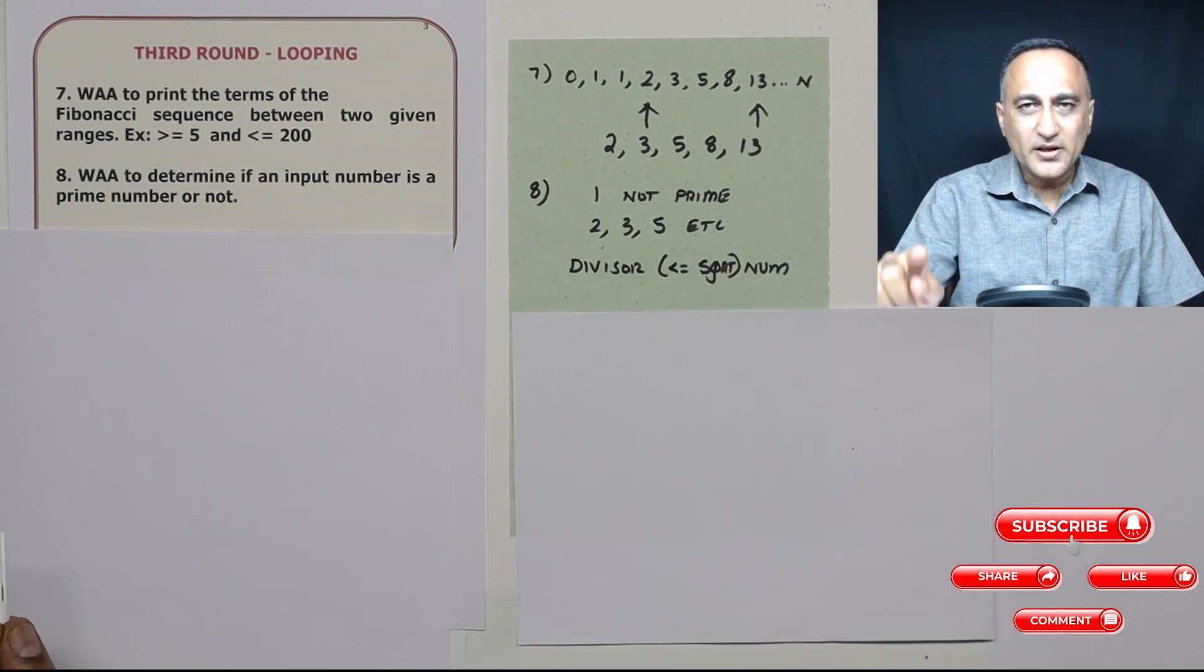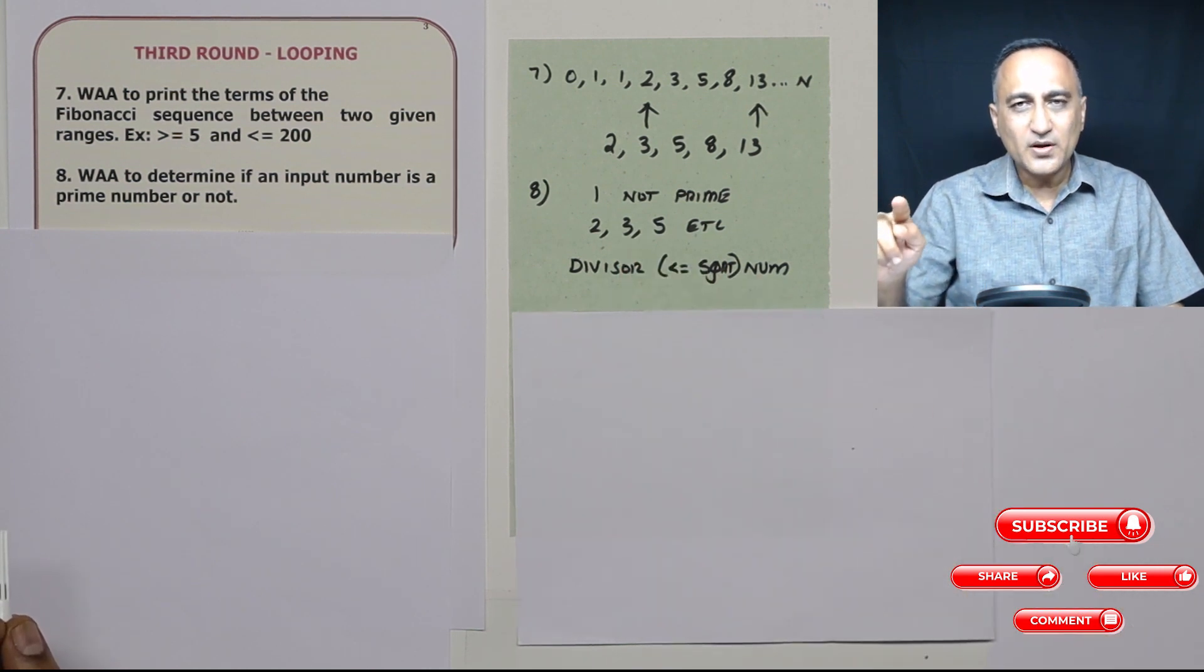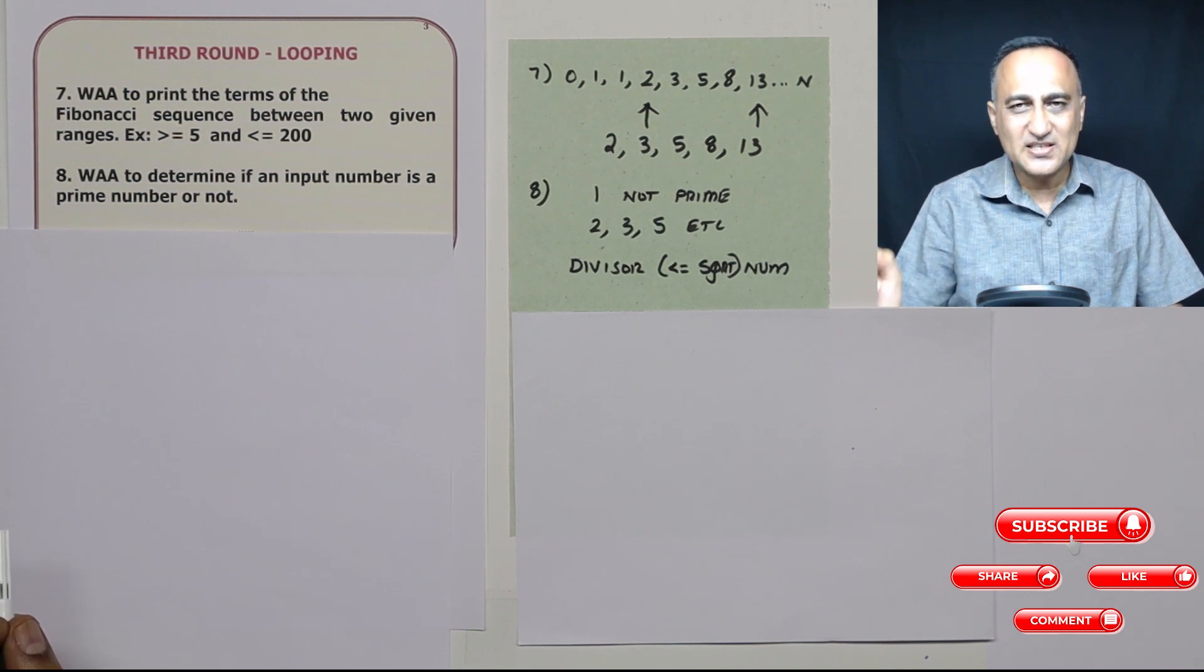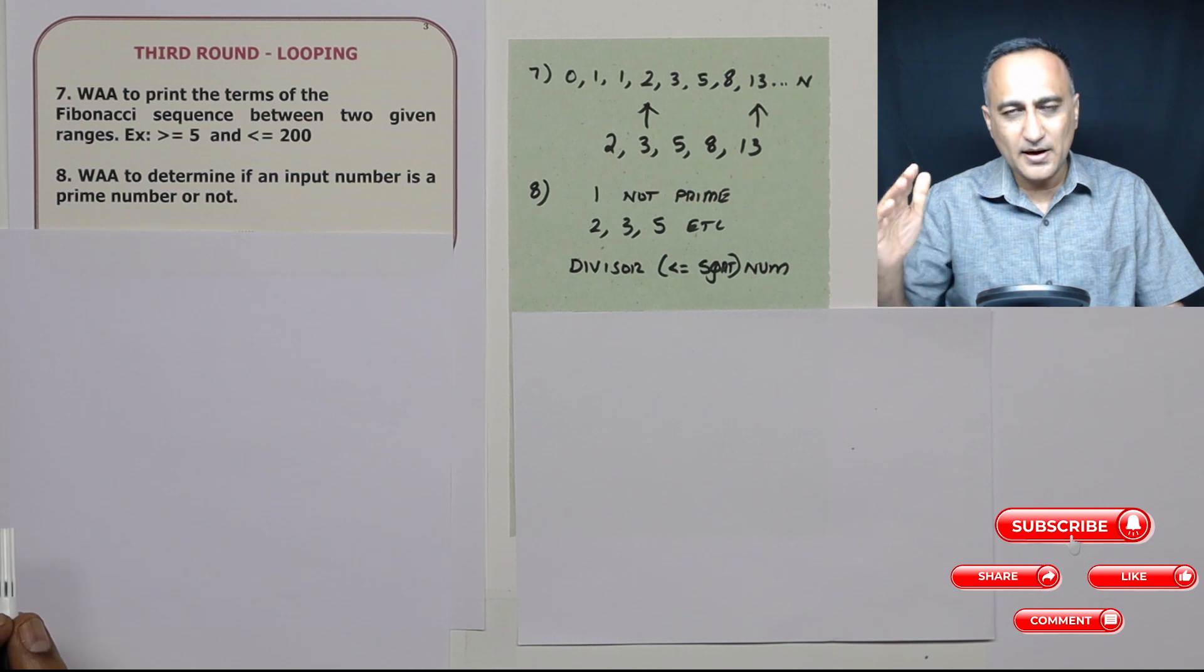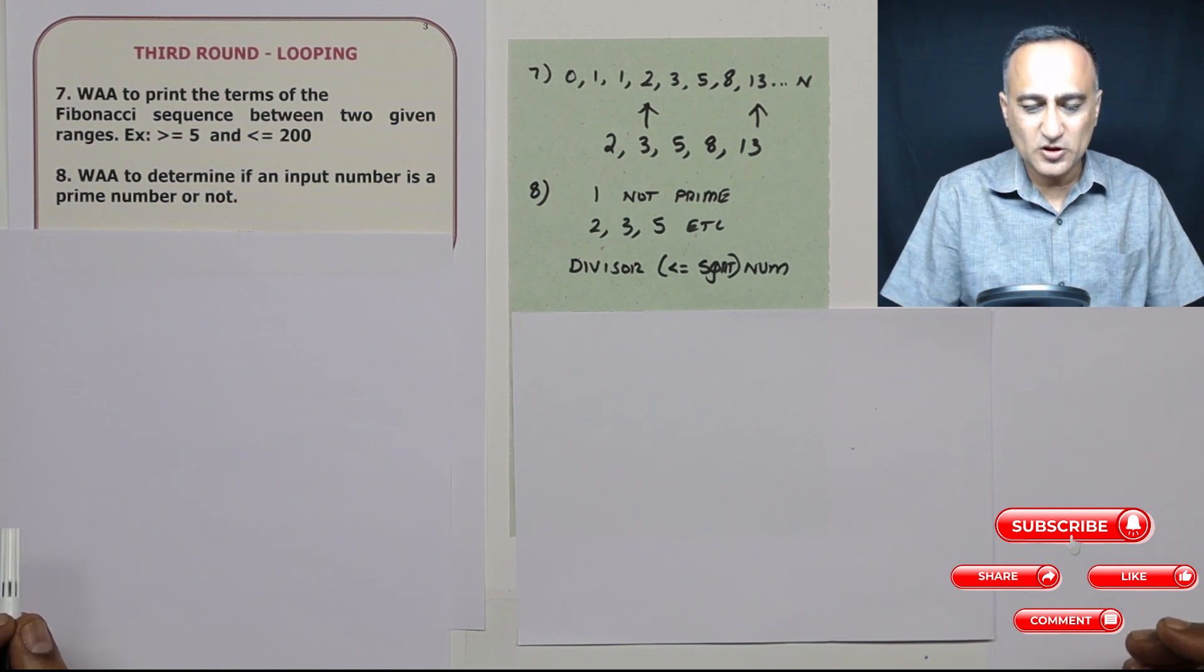And then you will keep checking whether that number is perfectly divisible by three, in the sense after dividing by three, whether the remainder happens to be zero.